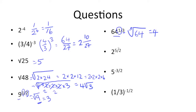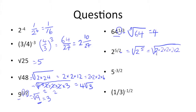Next up, we have 2 to the 5 over 2. We know that this is going to be a square root problem — specifically the square root of 2 to the 5th power. 2 to the 5th means 2 times itself 5 times. We can hunt down pairs, since this is a square root. We have one pair of 2's and another pair of 2's, which means we can bring 2 times 2 to the outside, and we're left with 2 underneath the root. So we get an answer of 4 times the square root of 2.